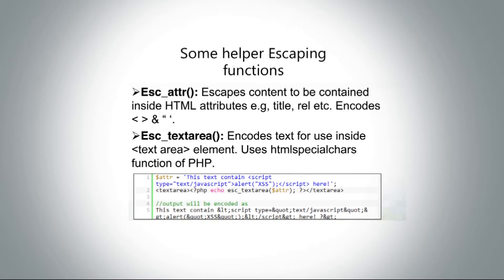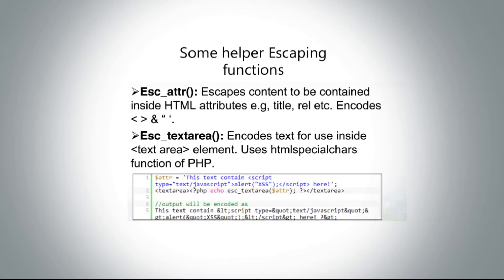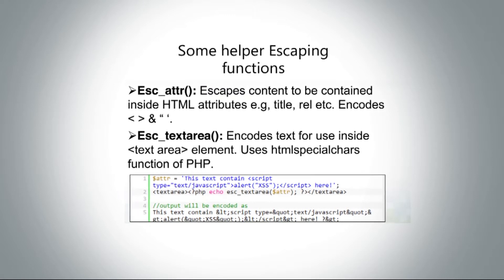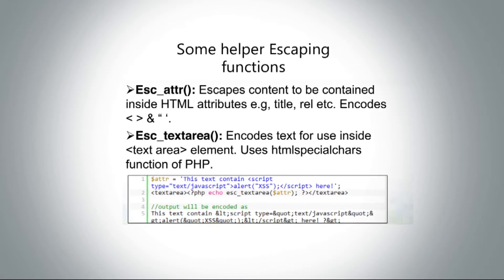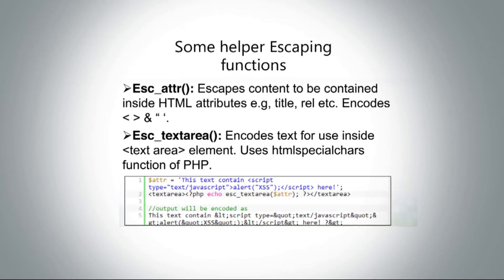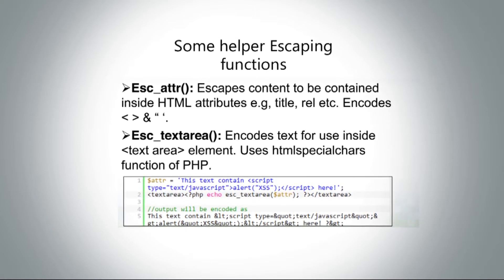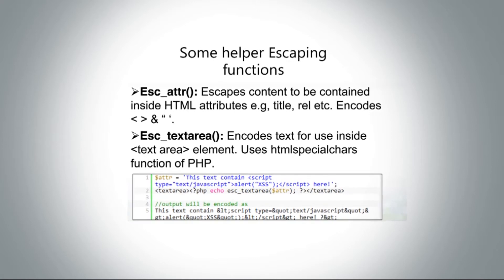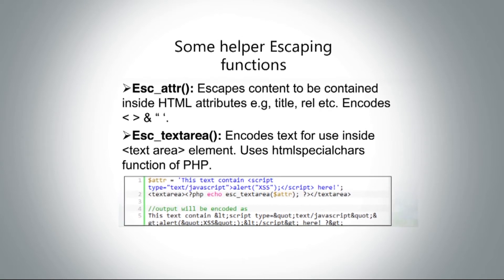You use `esc_textarea()` when encoding text area content. For example, if a variable contains text with an injected script tag, when you do `echo esc_textarea($variable)`, WordPress converts the script tag's angle brackets and quotes into their HTML entities — like `&lt;`, `&gt;`, `&quot;`, and `&amp;`. Instead of the script being executed as code, it is simply displayed as plain text in the browser and causes no harm. That is what `esc_textarea()` does.